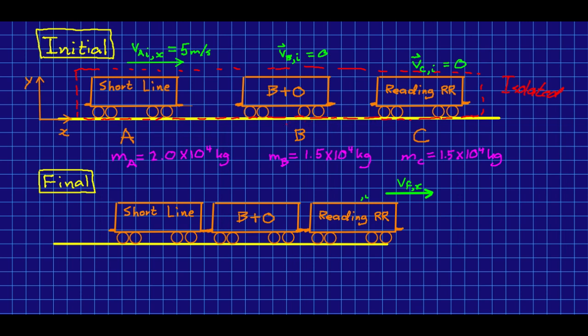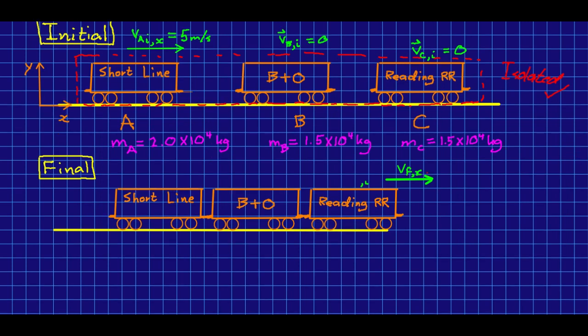The train cars are going to interact with the track via friction, but steel wheels on a steel track, there's going to be very little friction. Everything's very smooth. And so we think this should be a roughly isolated system. In fact, train cars rolling along tracks are quite well isolated.